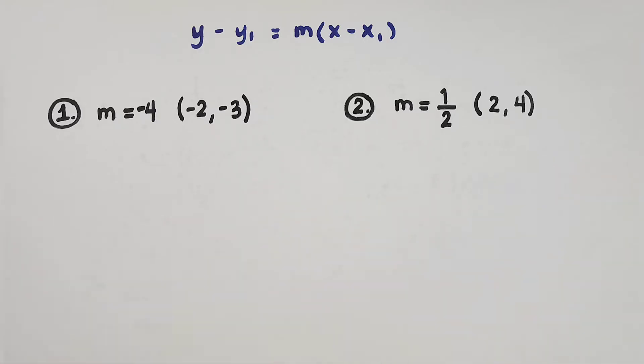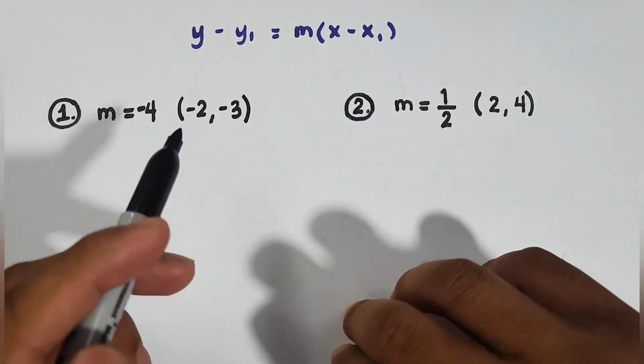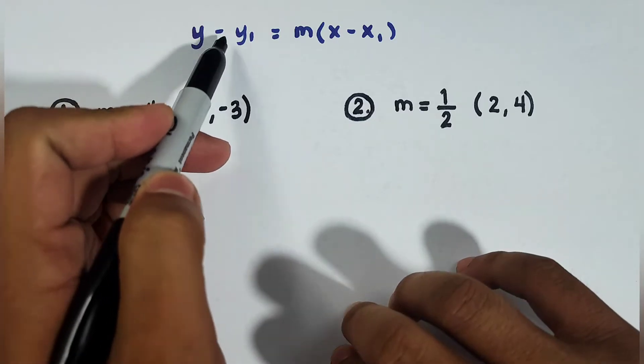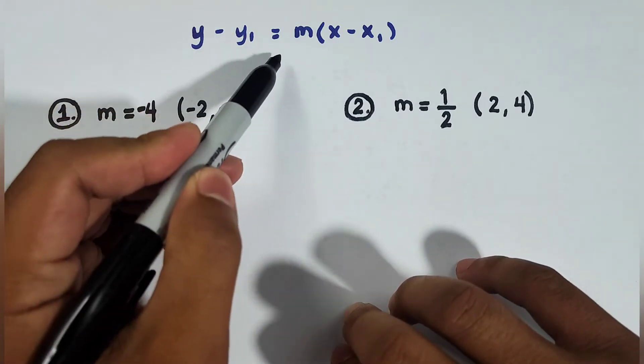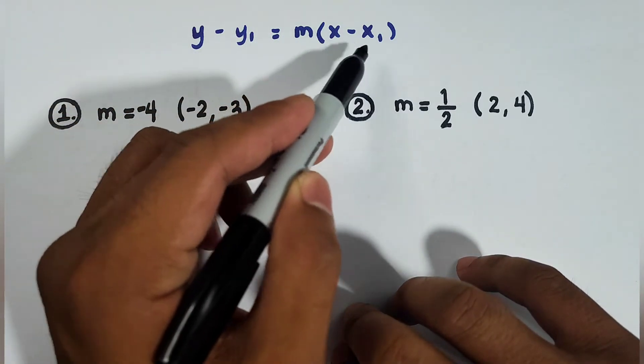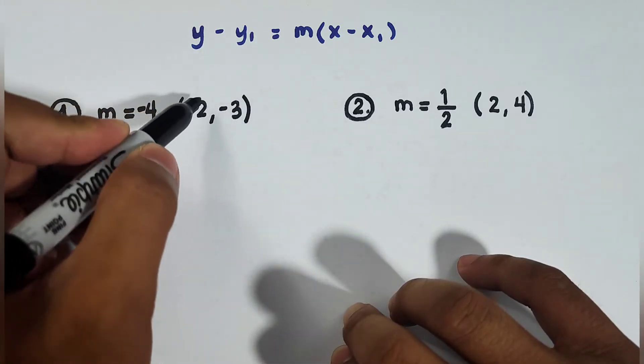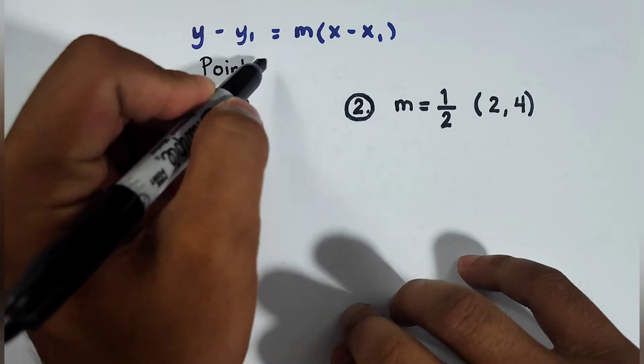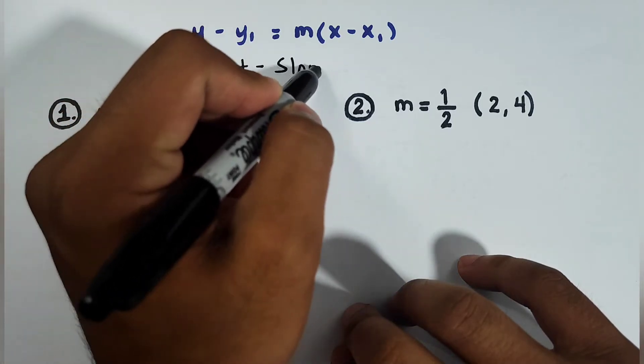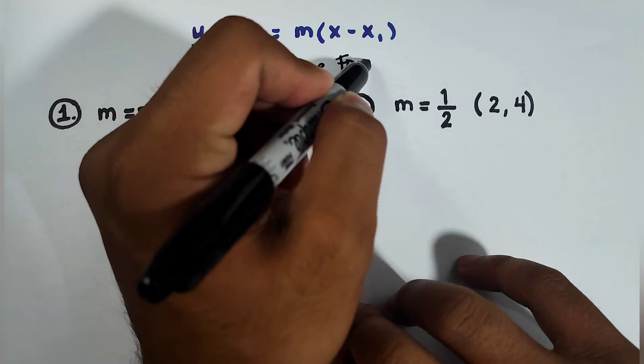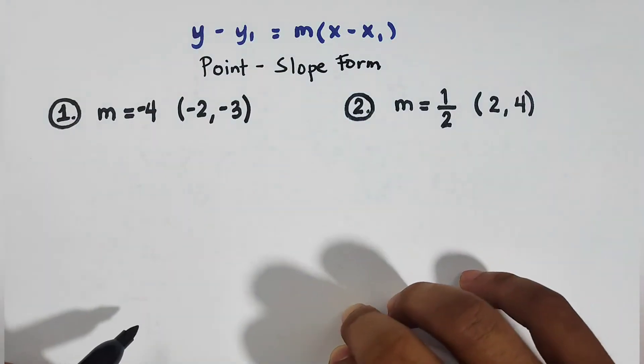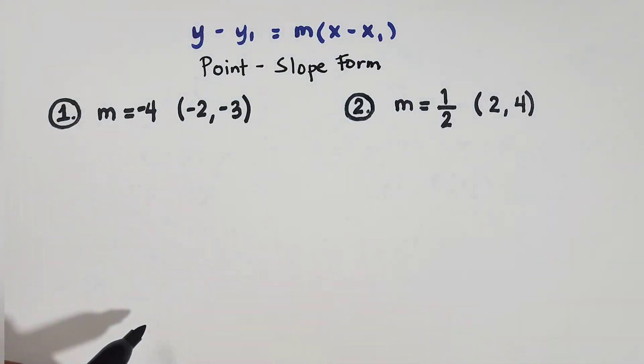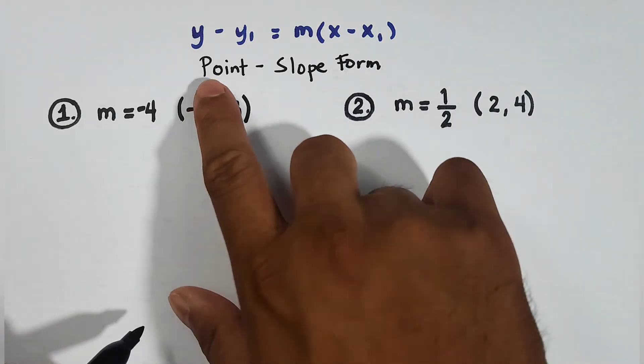we will talk about how to find the equation of a line given this form, y minus y sub 1 equals m times x minus x sub 1. The name of this form is Point-Slope Form. There are different forms in linear equations, but this time we will be using Point-Slope Form.